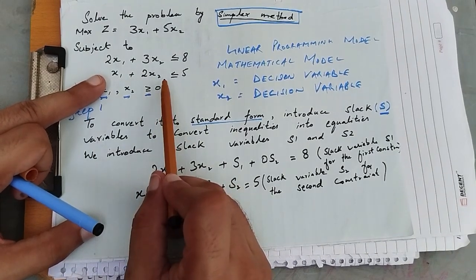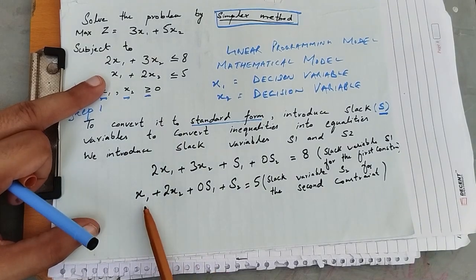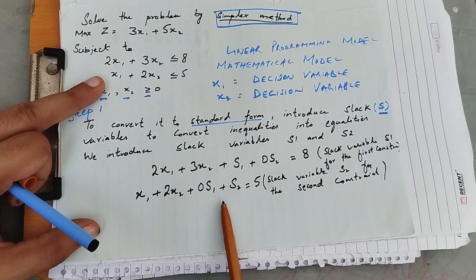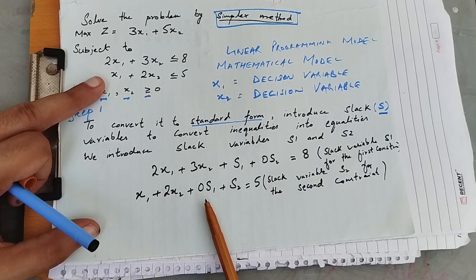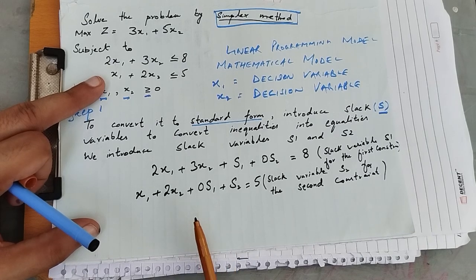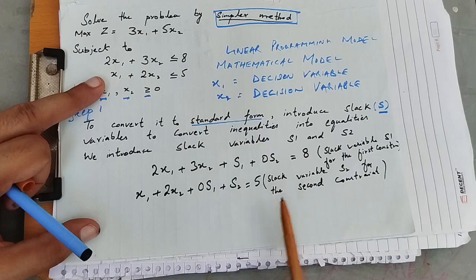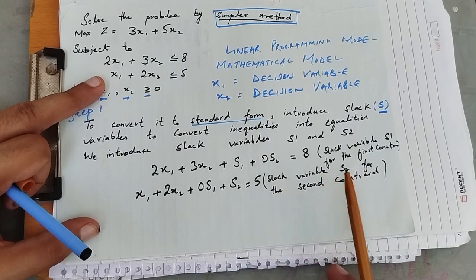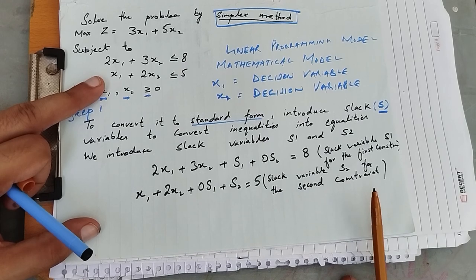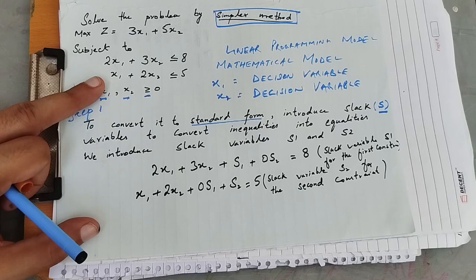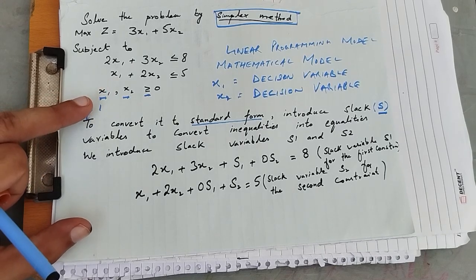For the second constraint, we write: x₁ plus 2x₂ plus 0·s₁ plus s₂ equals 5. Slack variable s₂ is introduced for the second constraint. When we introduce one slack variable in a constraint, the other slack variable has a coefficient of zero. If there were three constraints, we would go up to s₃.